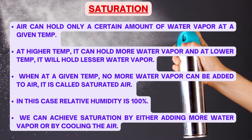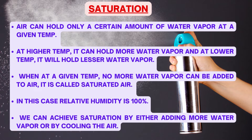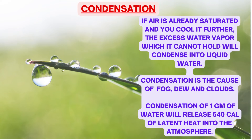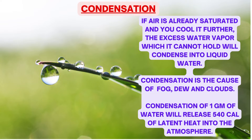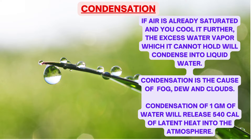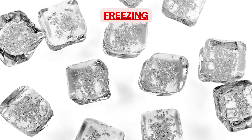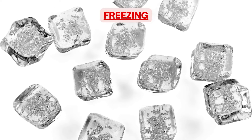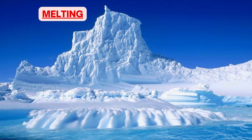Saturation: air can hold a certain amount of water vapor at a given temperature — more at higher temperatures and less at lower temperatures. When no more water vapor can be added at a given temperature, the air is called saturated, and relative humidity is 100%. Saturation can be achieved by adding more water vapor or by cooling the air. Condensation: if saturated air is cooled further, excess water vapor condenses into liquid water — condensation is the cause of fog, dew, and clouds. Condensation of one gram of water vapor releases 540 calories of latent heat into the atmosphere. Freezing is conversion of water droplets to ice at or below 0°C; melting is the change from solid to liquid.